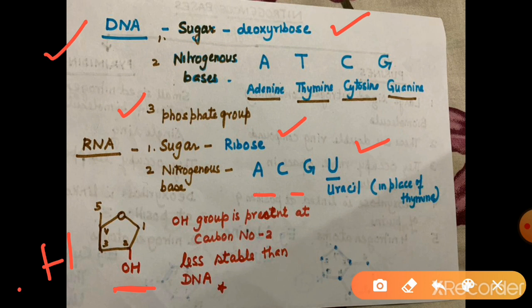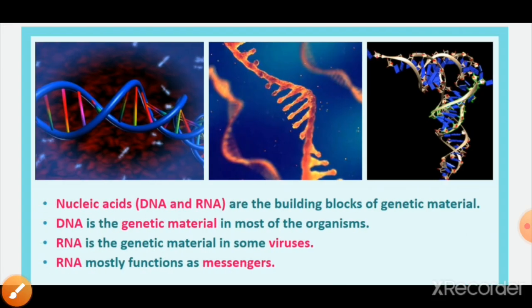Students, in RNA thymine is absent. In place of thymine, there is uracil as the nitrogenous base, and phosphate group is also present in RNA. RNA is less stable and DNA is more stable. This is because the presence of the OH group at position number 2 leads to more hydrolysis chances.